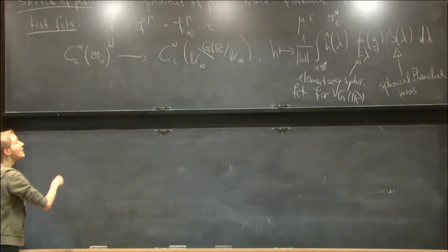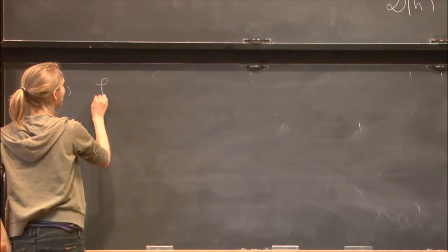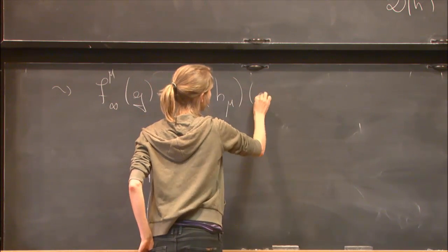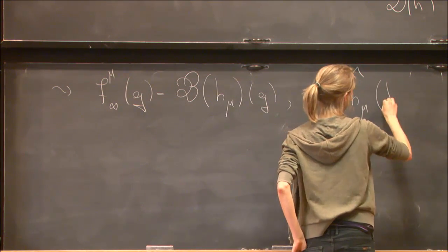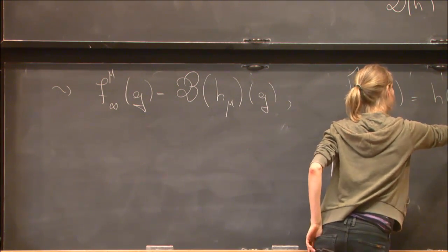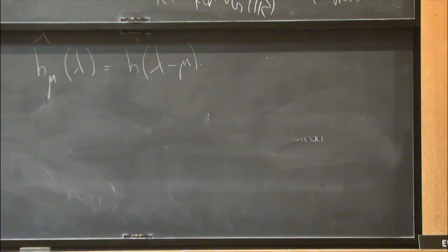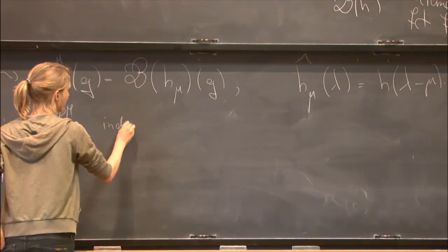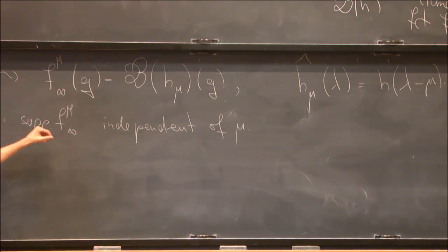Such a compactly supported function is mapped to some transform involving the elementary spherical function and the Plancherel measure. This function localizes the spectrum at zero, and if we shift it by some mu we can get the localization at mu. We take this shifted function as our test function. Let's call this mu of h, and then f_mu at infinity is V_h of mu of g, where this h_mu is shifted by the spectral parameter such that the Fourier transform is just lambda minus mu. The support is independent of mu.